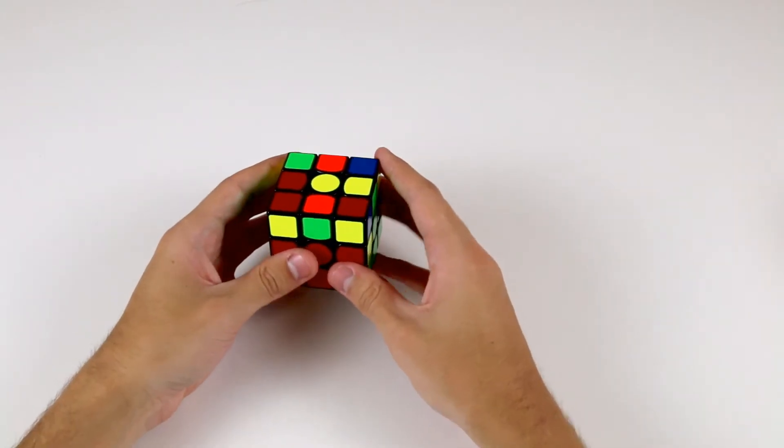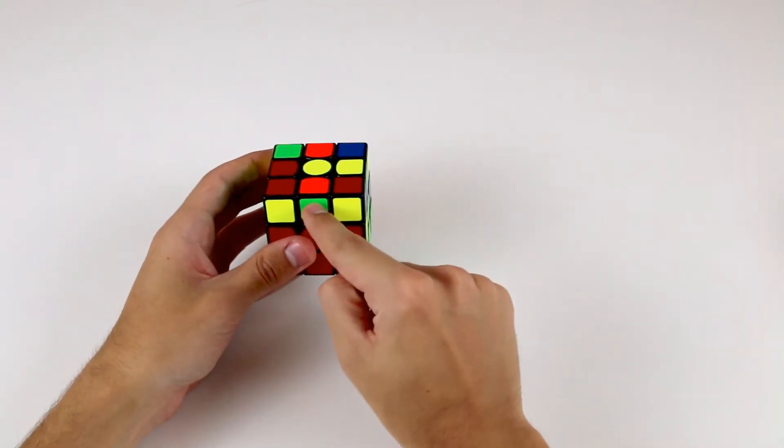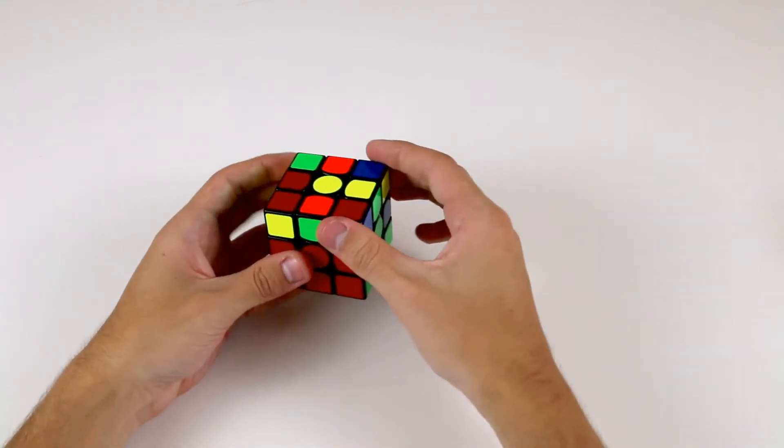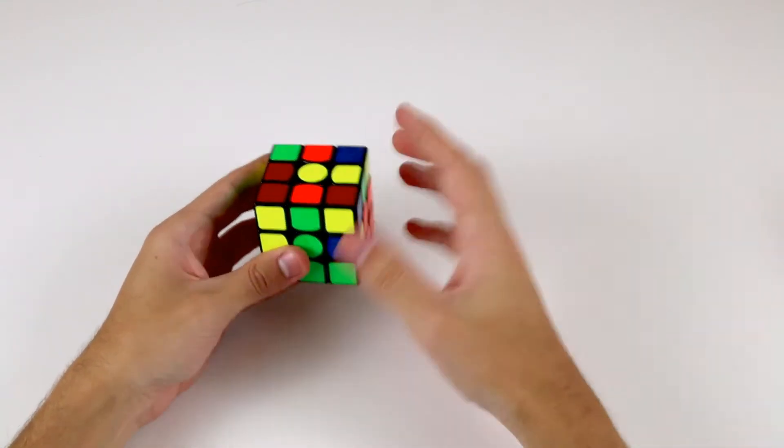The next piece that we see is this orange and green edge piece. So what we want to do is rotate it so that this green sticker, which is facing the outside, matches up with the green center, remembering to keep the edge in the front position.